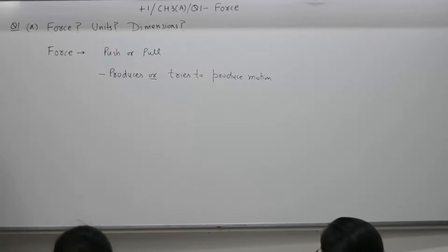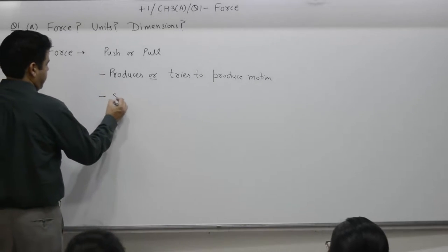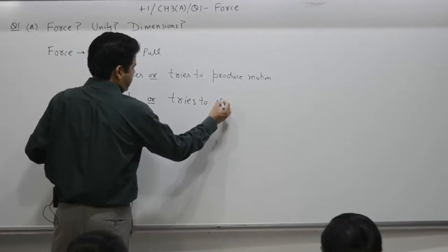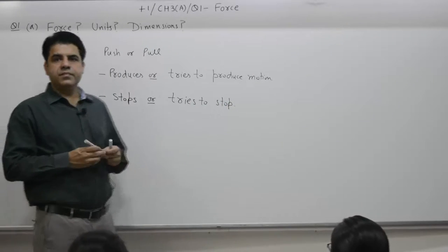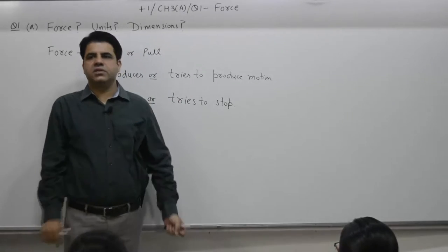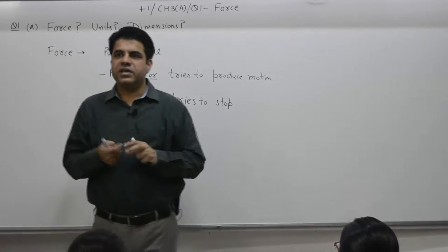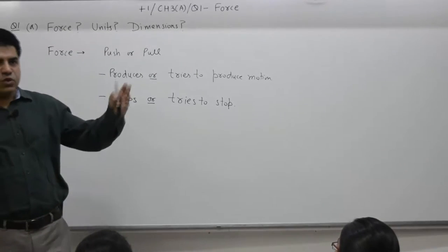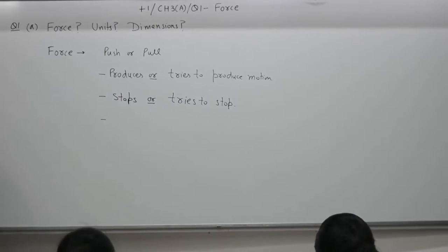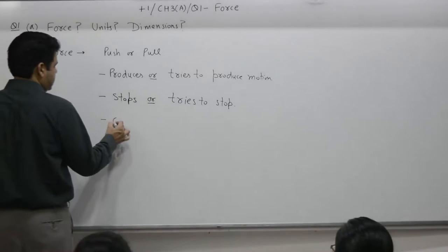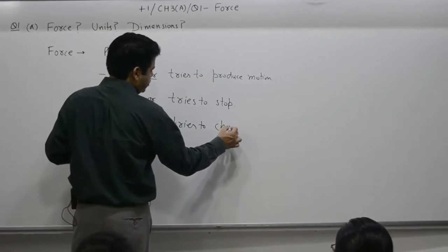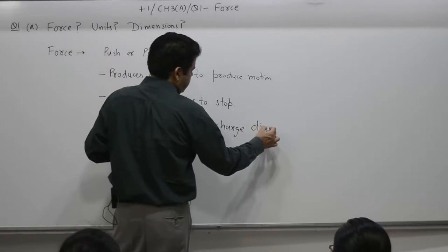That is the first part: produces or tries to produce motion for an object at rest. Second: force stops or tries to stop. There is a cricket ball, you try to stop it, it stops. You apply force, it stops. But if there is an aeroplane and you try to stop it, a fast moving train you try to stop it, then you may try.